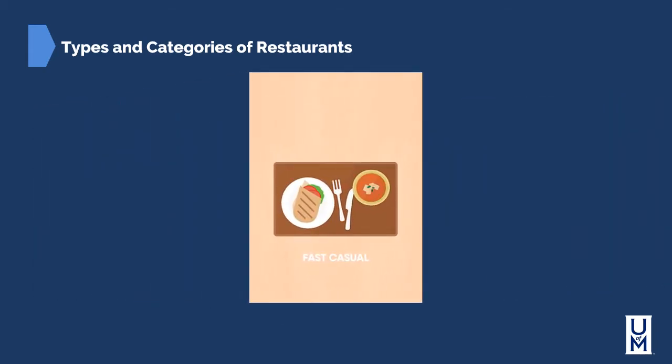Fast casual is one of the newest categories of restaurants and consists of mostly things such as delis, such as Jason's Deli, Schlotzsky's Deli, and various other kinds of delis. Along with this, grocery store deli items also fall under this category.